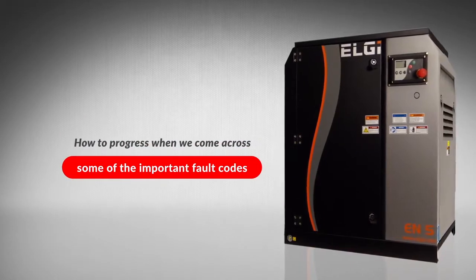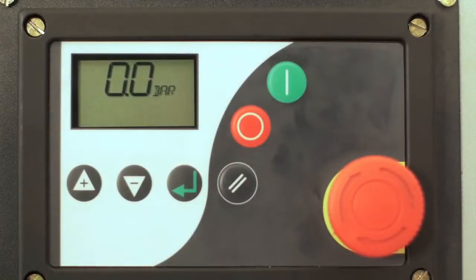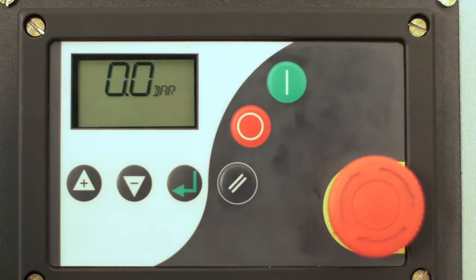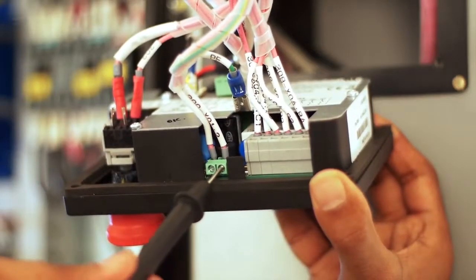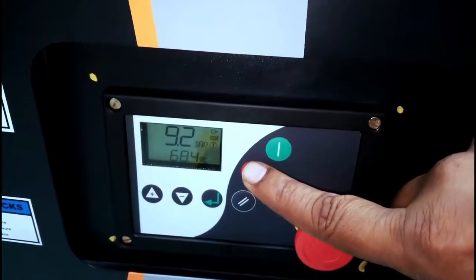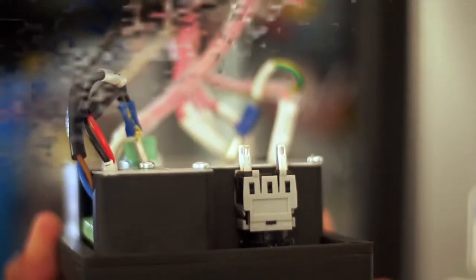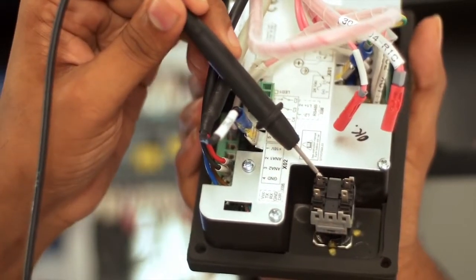We will see how to progress when we come across some important fault codes. The error code E0010 is for emergency stop. If the symbol flashes, the compressor will stop. Check the voltage at the incoming terminal X01, 02, and 304 wire. If the voltage is okay, switch off the machine and check the continuity of the push button.